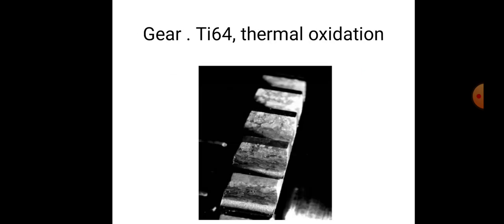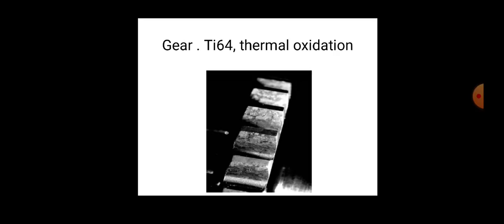The Ti-64 (titanium alloy) with thermal oxidation is shown in this diagram. These are the surfaces where we have titanium coating — this represents thermal oxidation on titanium alloy surfaces.